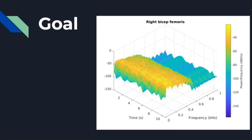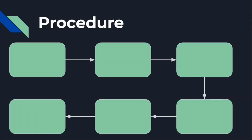With regular FFT you lose the time component, but with STFT you can include the time component. You can see frequency, time, and amplitude or power components all in the same plot. That's the STFT procedure.